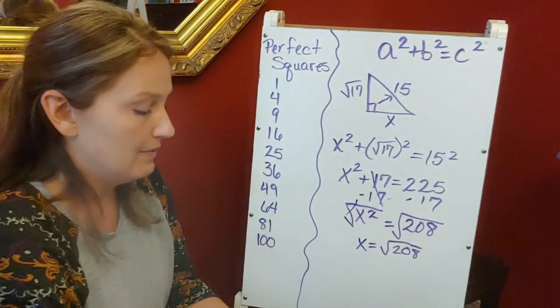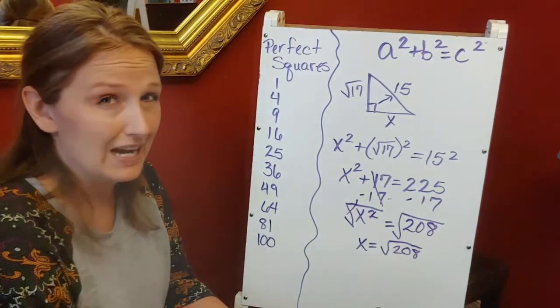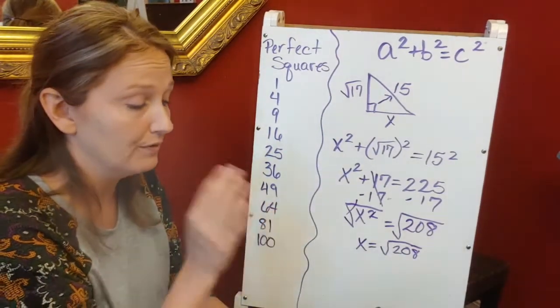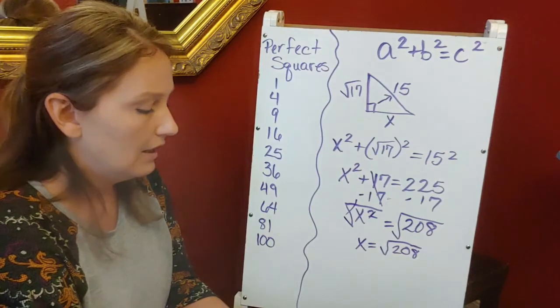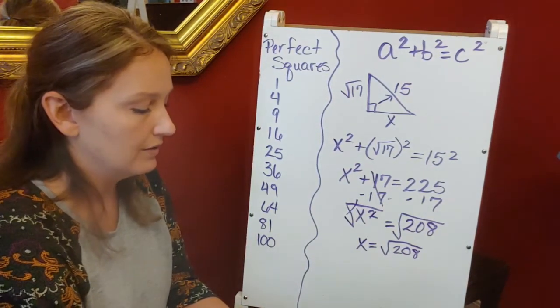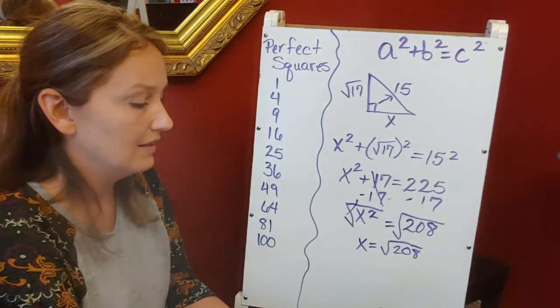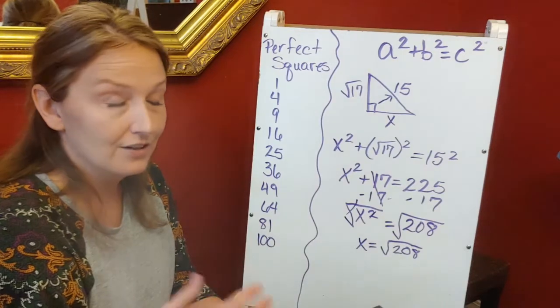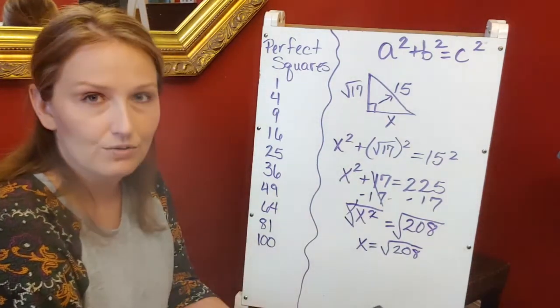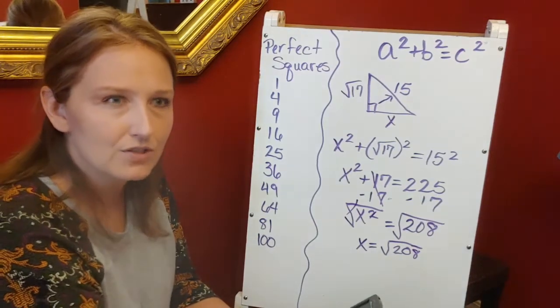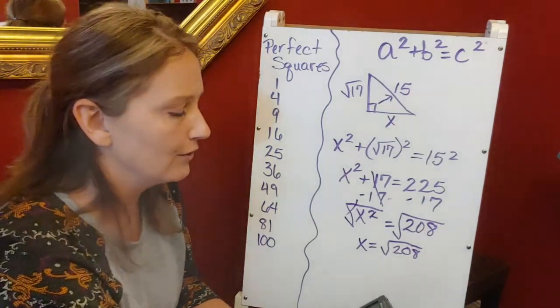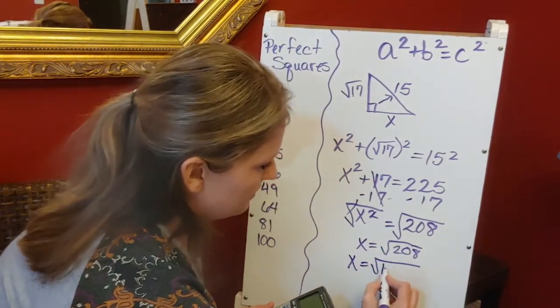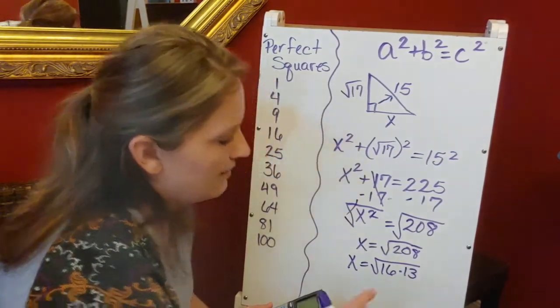If I divide by 4, it goes in 52 times. I'm going to keep going to see if other perfect squares divide into 208. Divided by 9 doesn't go evenly. 208 divided by 16 does work—16 × 13 = 208. 13 is prime and doesn't factor further, so x = √(16 × 13).